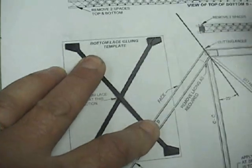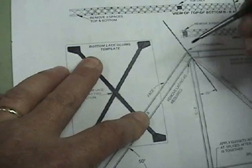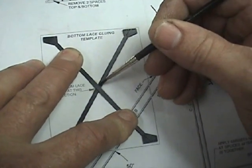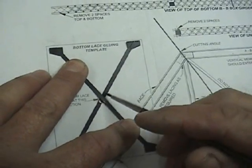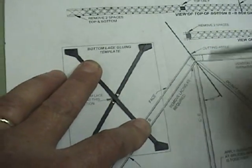Now, using the template that's included with your Central Valley Bridge Kit, I'll glue these bottom laces together and set them aside and let them dry.